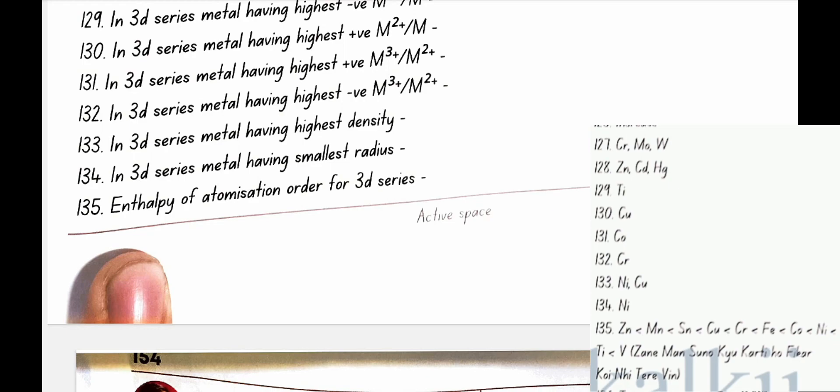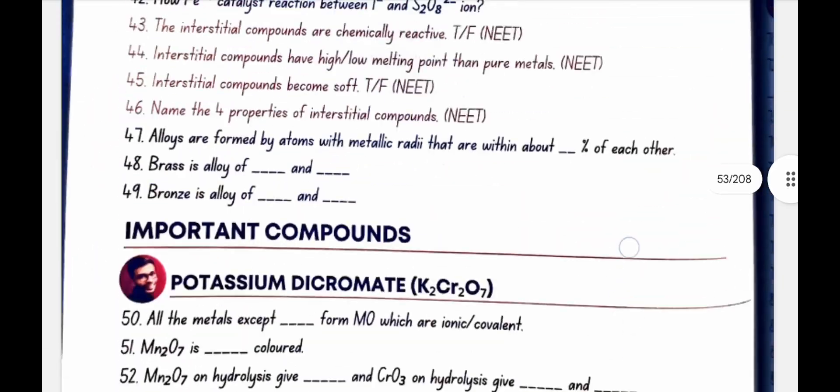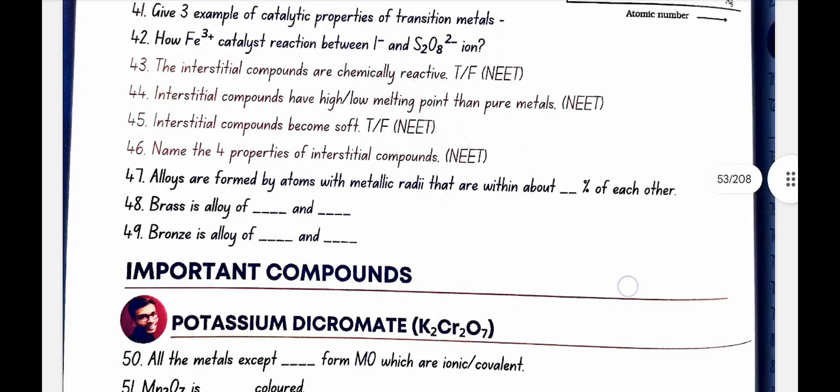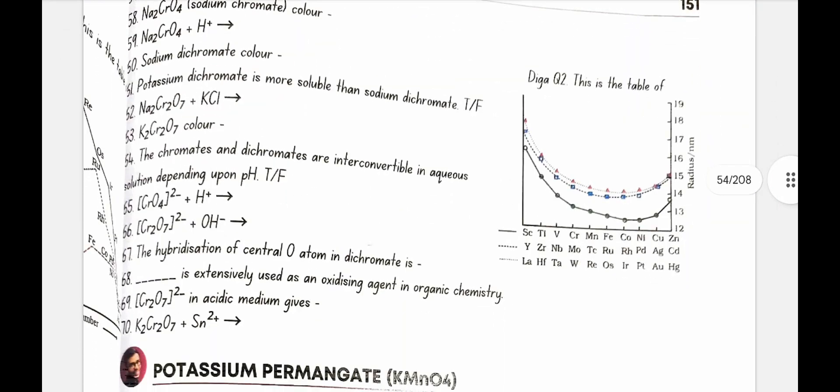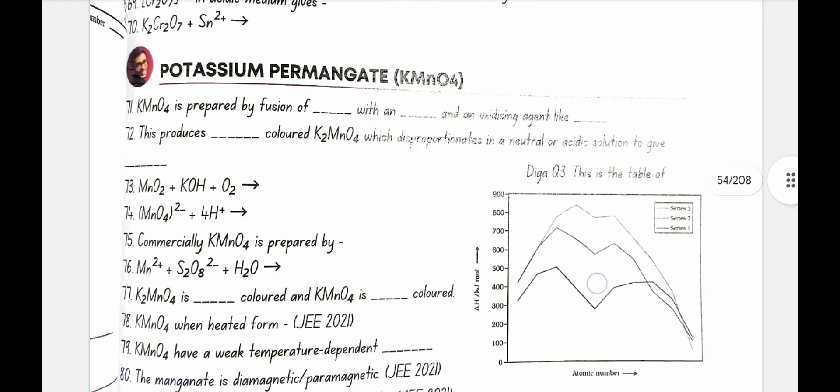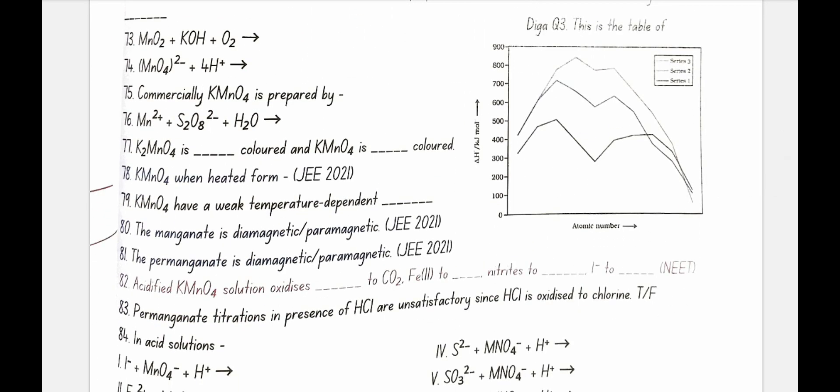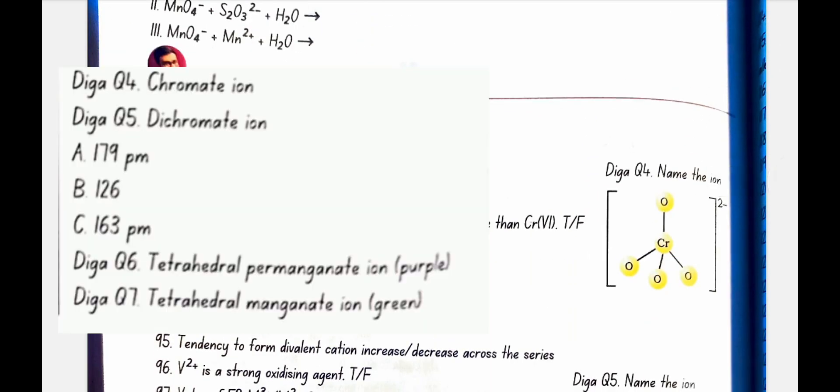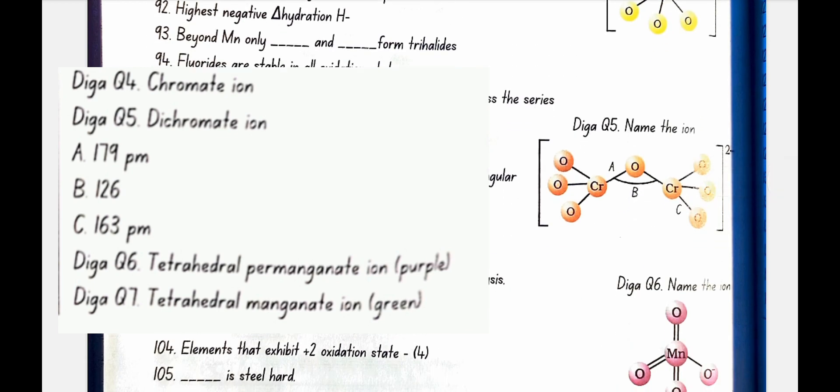Here is diagram one, the table of trends in the melting point of transition elements. This table is very important. Diagram two, this table is of trends in atomic radii of transition elements. This is third diagram, a table of trends in enthalpies of atomization of the transition elements.